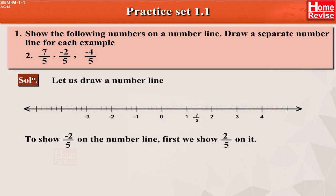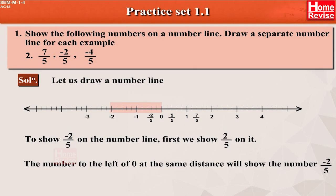To show minus 2 upon 5 on the number line, first we show 2 upon 5 on it. Here is the number 2 upon 5. Here is the number minus 2 upon 5. The number to the left of 0 at the same distance will show the number minus 2 upon 5.